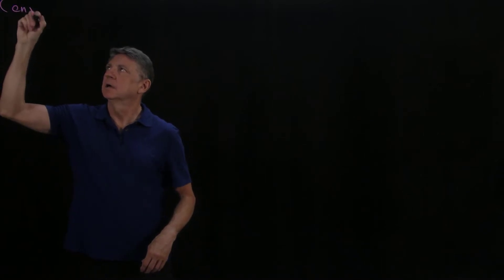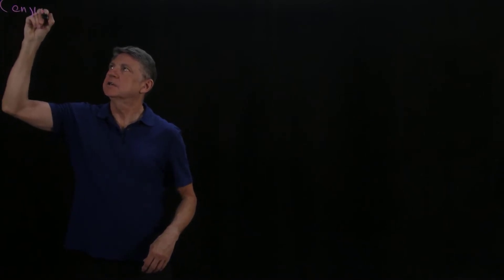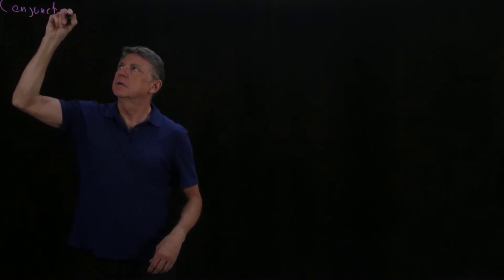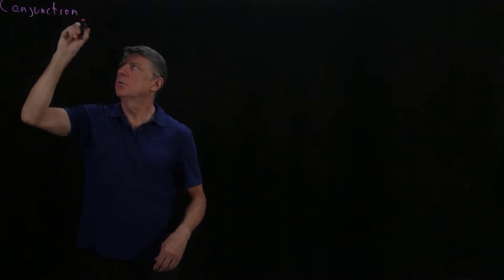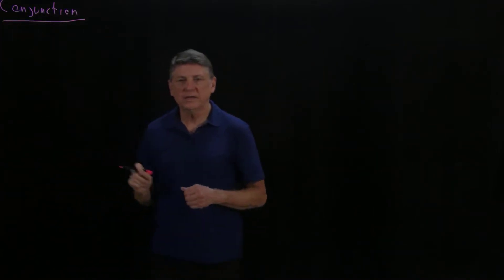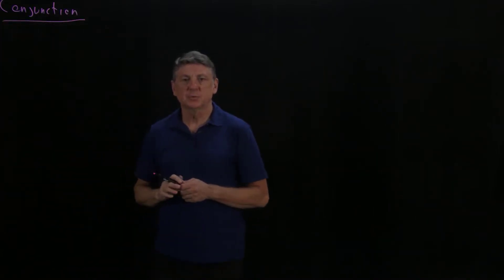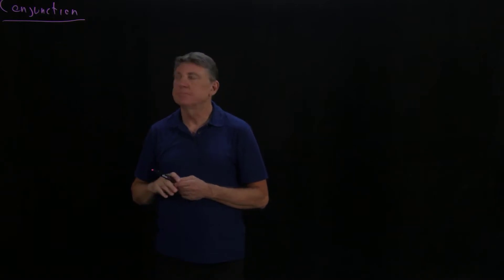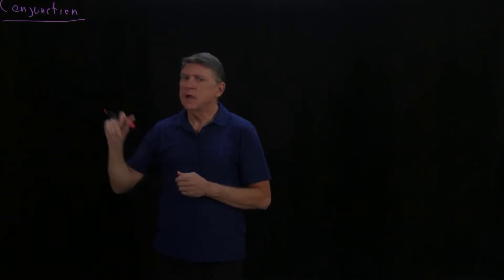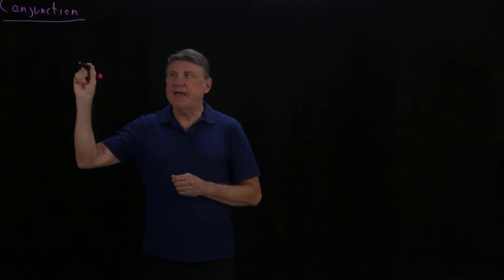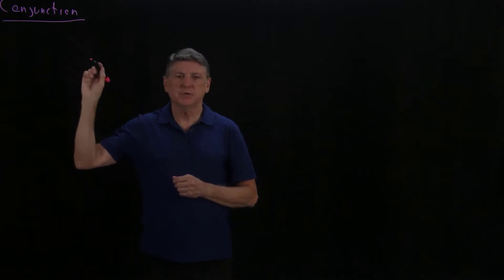Welcome. In this session on natural deduction, we'll explore the three rules that are related to conjunction. Conjunction is the formal way of writing what we think of as words such as and, but, also, etc. Instead of using and, we'll try to use conjunction.